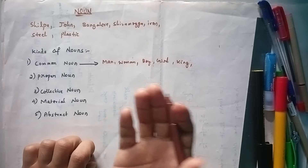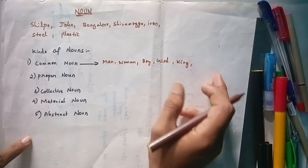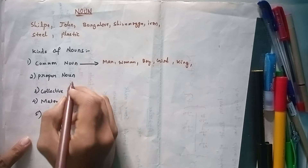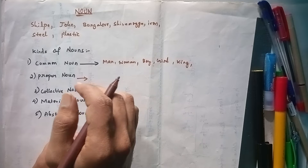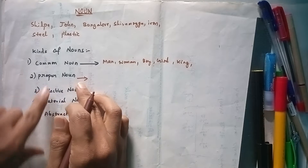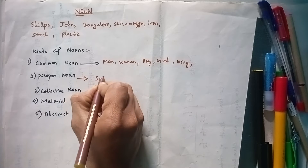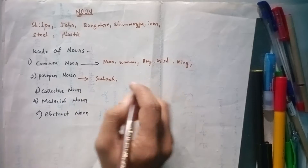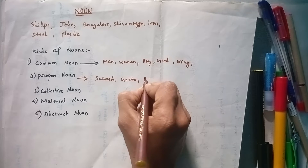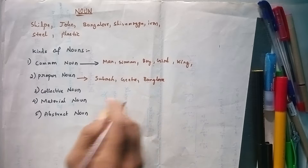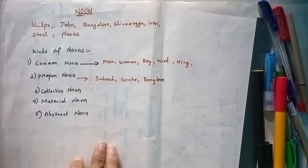A proper noun is used for a particular person, place, or thing. A particular name is used — for example, Subhash.